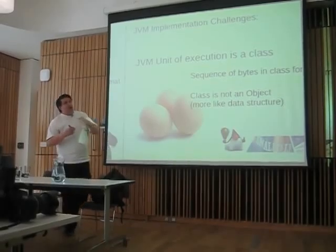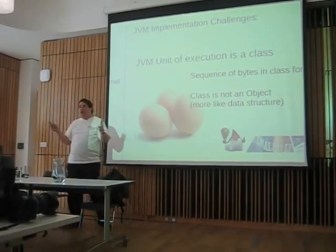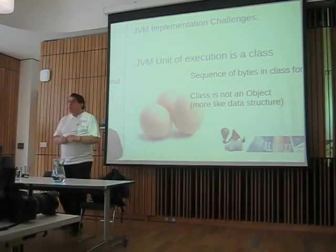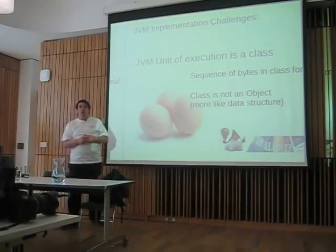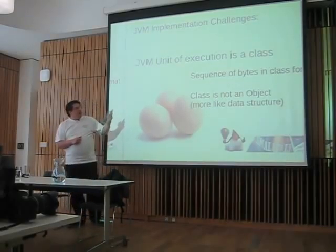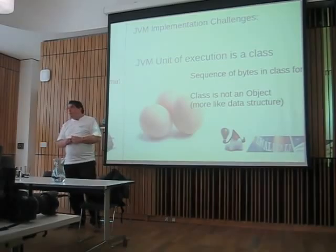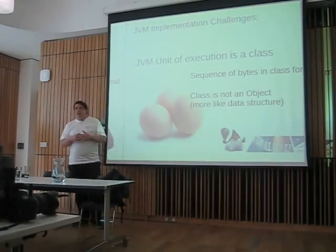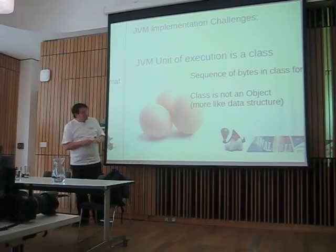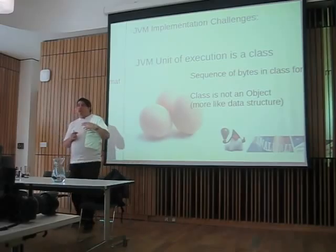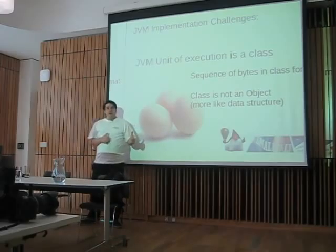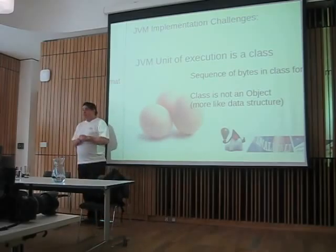An image file contains a series of bytes, and every class in the system is in that one image file. For the JVM, you have to package things a little more granular. Each class that you put into the JVM must be in its own file, which is a sequence of bytes in the class file format. What's important to note is that a class, from the JVM's perspective, is not a first-class object — it's more like a dumb data structure, and that presents challenges.